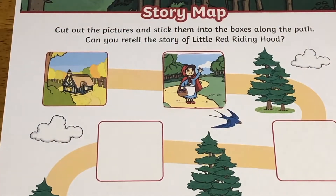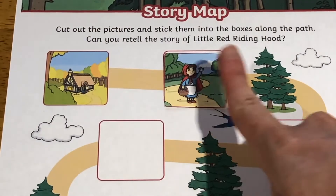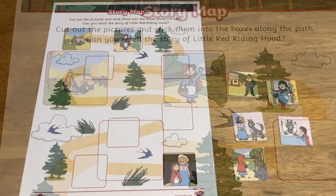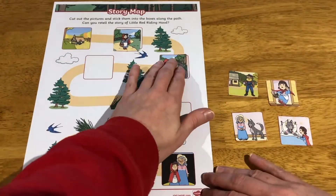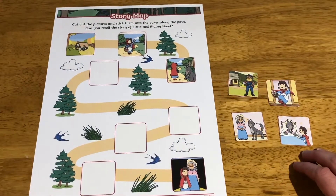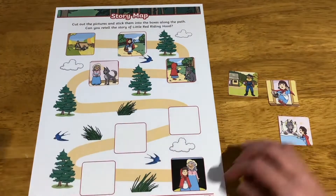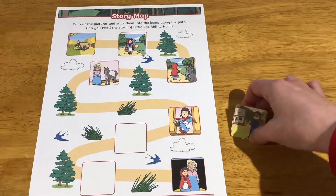Can children decide which picture should come first in the story? Can they explain what is happening in this picture? Invite children to decide what happens next in the story. Can they place all of the pictures in the correct order along the story map?